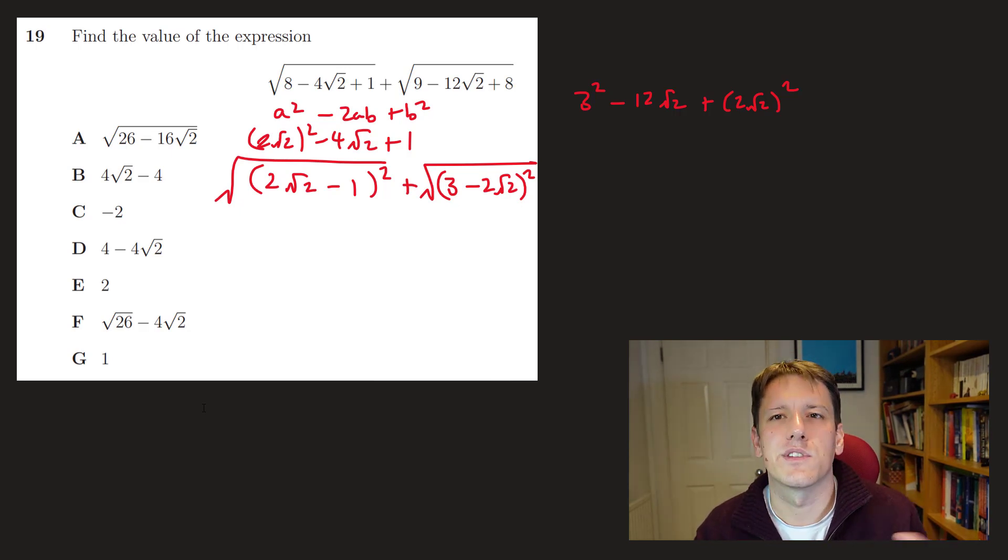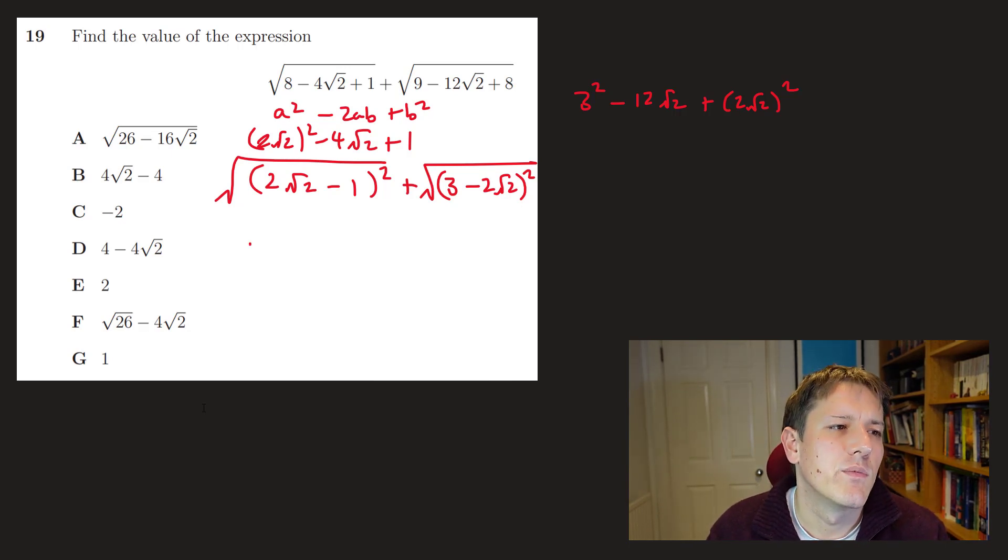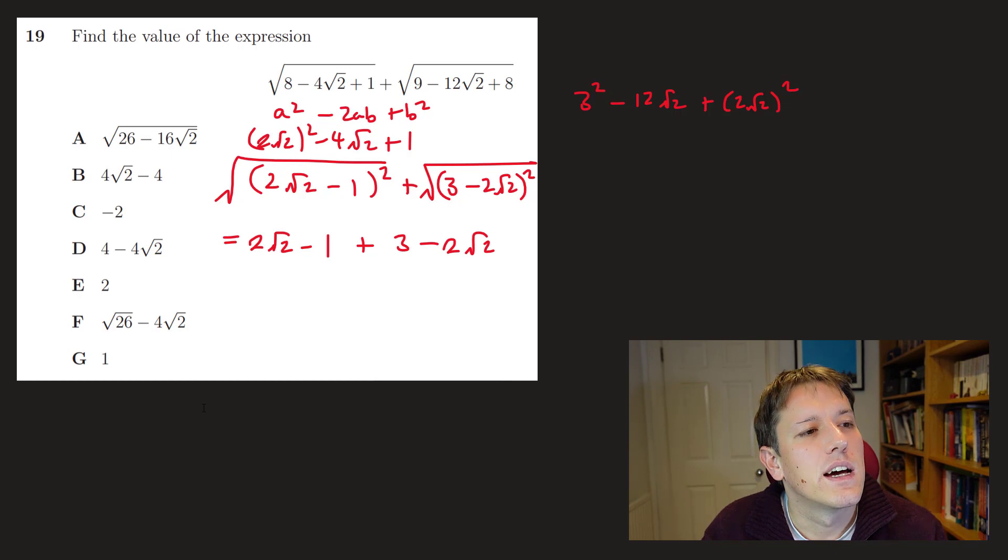And we want to take positive square roots here, so I just want to make sure that I've, because I could write 2 root 2 minus 1 all squared as 1 minus 2 root 2 all squared, so clearly when I, there's two square roots of this number, the positive and the negative one, because this is the positive square root sign, I want to take the positive one, 2 root 2 is going to be bigger than 1, so this one I do want to take 2 root 2 minus 1, and also 3 is bigger than 2 root 2, so actually they're already both the right way around, so this is what I get, the 2 root 2s cancel out, and I'm just left with 3 minus 1, which is 2, so the answer is e.